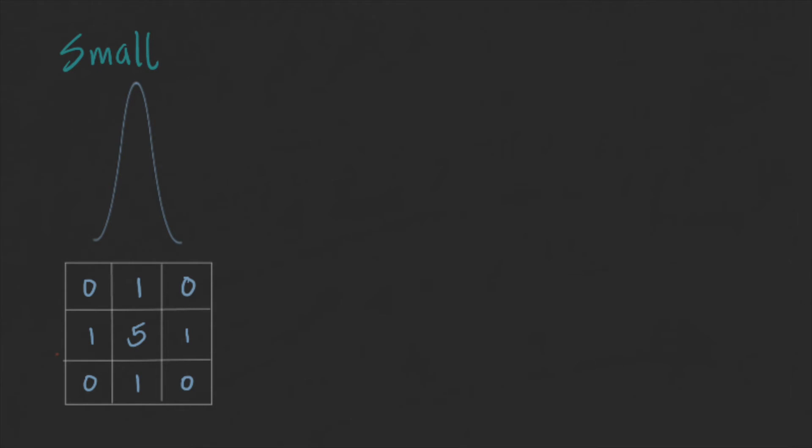A sigma slightly larger than one pixel can effectively clean some noise while conserving the structure of the image. Larger values will result in different levels of blur.